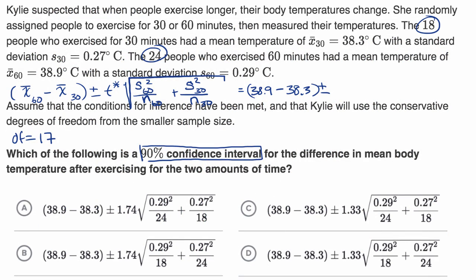So going back here, this is going to be plus or minus 1.74 times the square root. What's our sample standard deviation for the 60-minute group? Well, they give it right over here, 0.29, and we're gonna have to square that, divided by the sample size for the 60-minute group. So let's see, the 24 people who exercise for 60 minutes, so divided by 24,